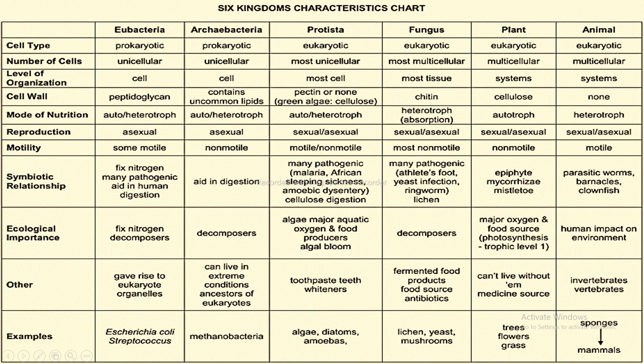First characteristic is cell type: Eubacteria prokaryotic; Archaebacteria prokaryotic; Protista eukaryotic; Fungi eukaryotic; Plant eukaryotic; Animal eukaryotic. Next characteristic is number of cells: Eubacteria unicellular; Archaebacteria unicellular; Protista most unicellular; Fungi most multicellular; Plant multicellular; Animal multicellular. Next is level of organization: Eubacteria — cell; Archaebacteria — cell; Protista — most cell; Fungi — most tissue; Plant — systems; Animal — systems.